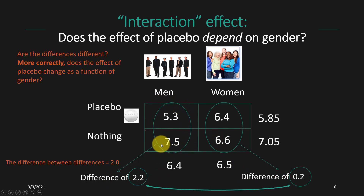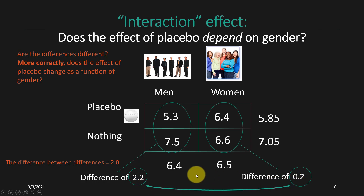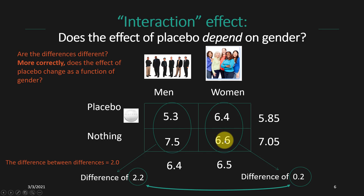The placebo effect appears to be stronger in men — again this is just a hypothetical situation — by quite a bit more than it is in women. For men who got nothing, they had much higher ratings of pain than men who took the placebo, by a difference of 2.2 points. For women who got nothing, their ratings were only 0.2 points higher than women who took the placebo. So this placebo effect is much bigger in men than in women, which suggests there might be an interaction and your gender has a moderating effect on the efficacy of the placebo.